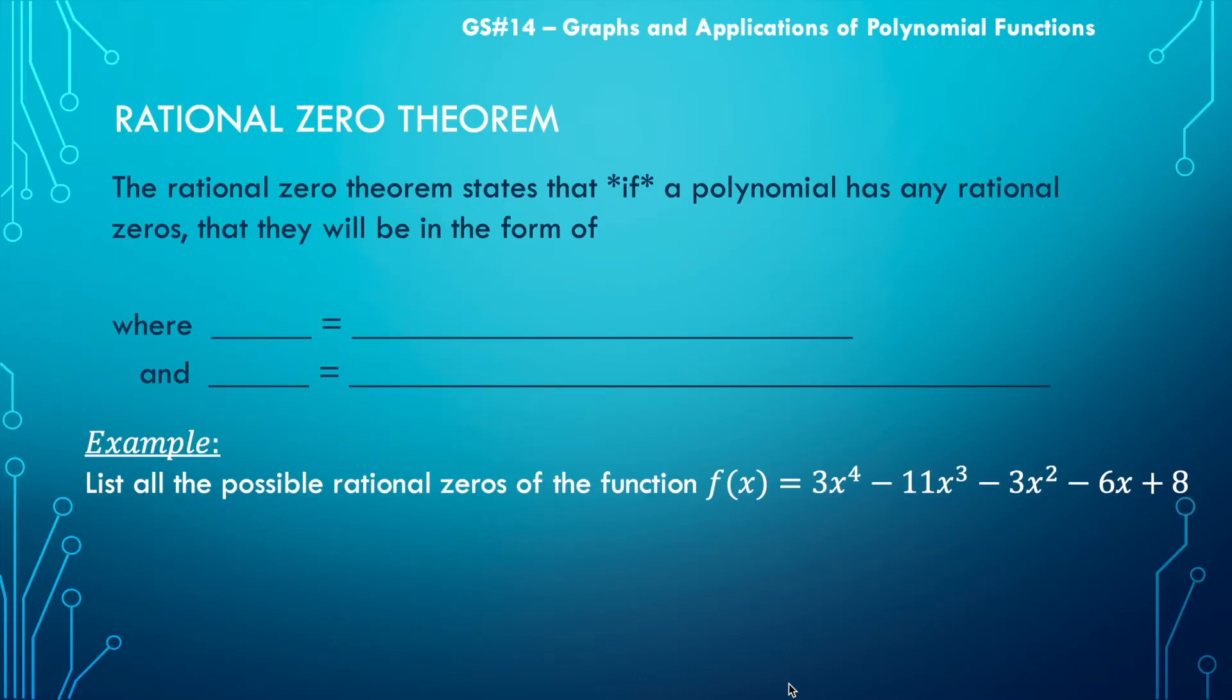The rational zero theorem states that if a polynomial has any rational zeros, they will be in the form of P divided by Q.